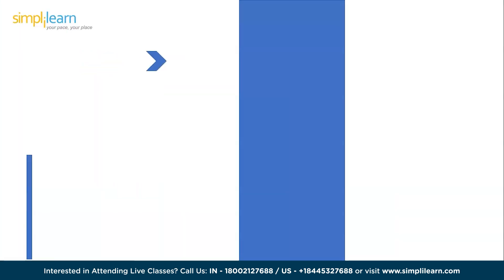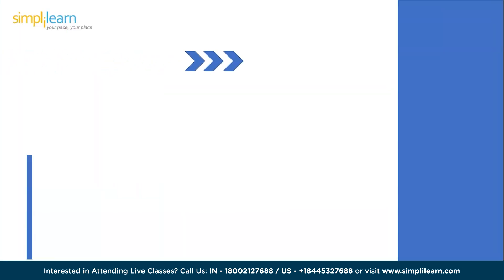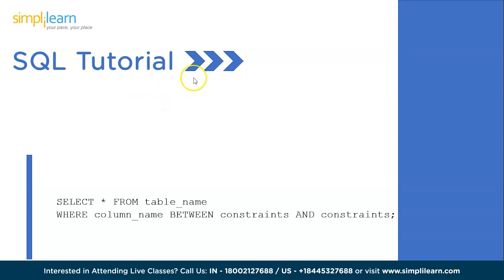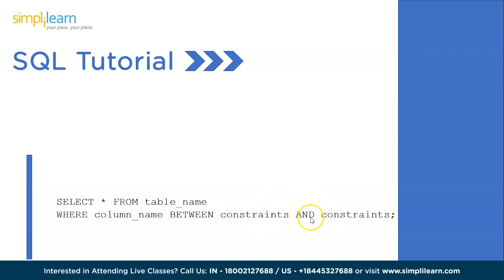Before we begin, let's take a quick look at the syntax we'll be using today. It is simply SELECT * FROM table_name using the WHERE clause, then the column you're filtering on, followed by the BETWEEN operator. The two constraint values are encapsulated between the BETWEEN keyword and the AND keyword.